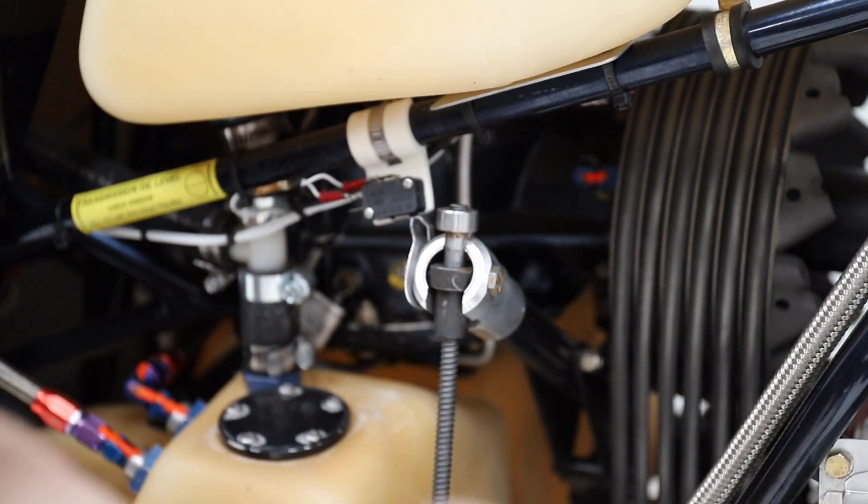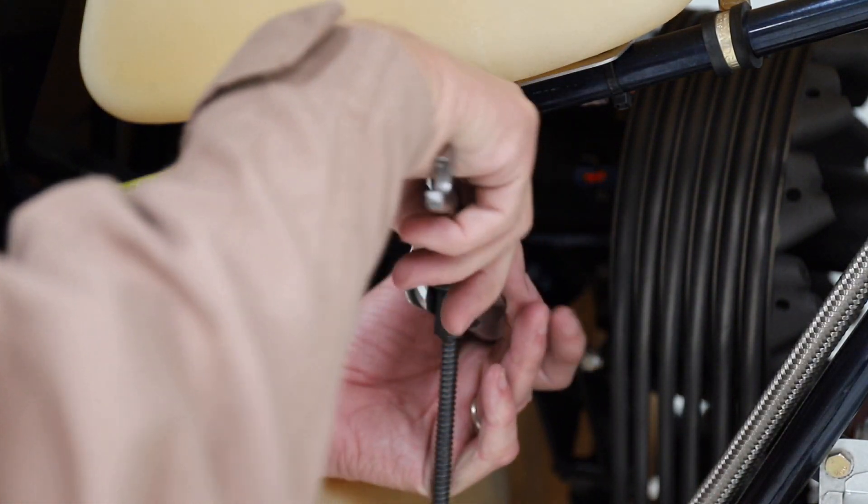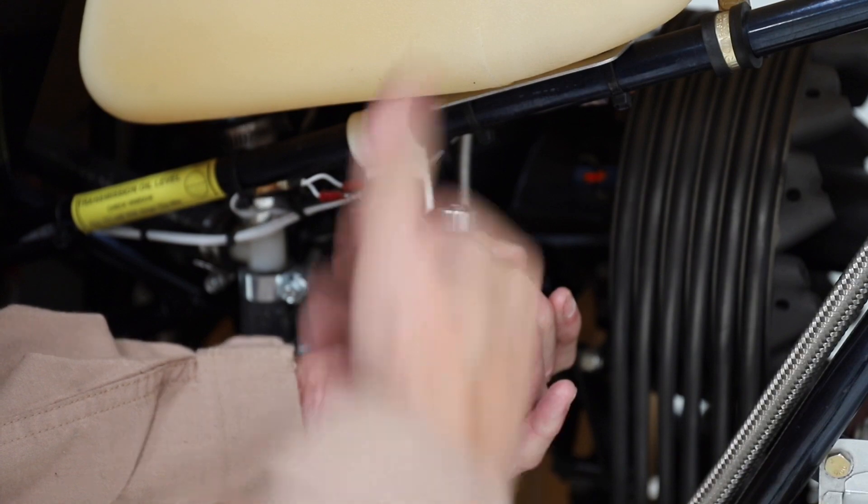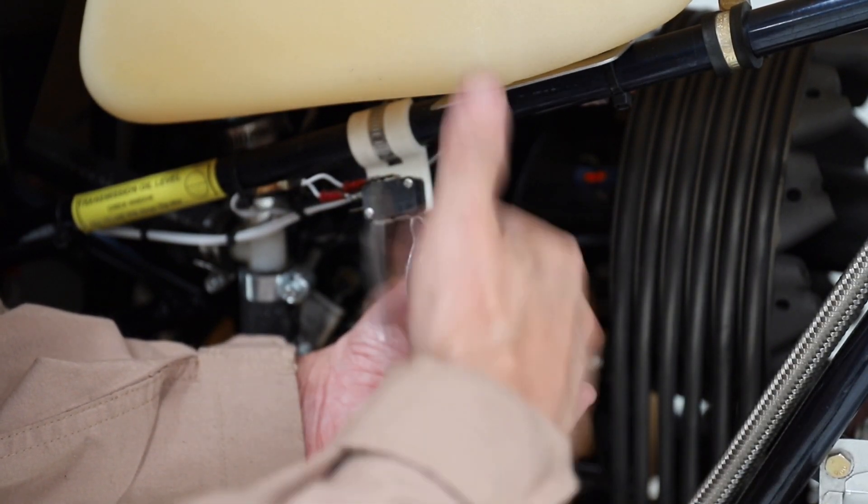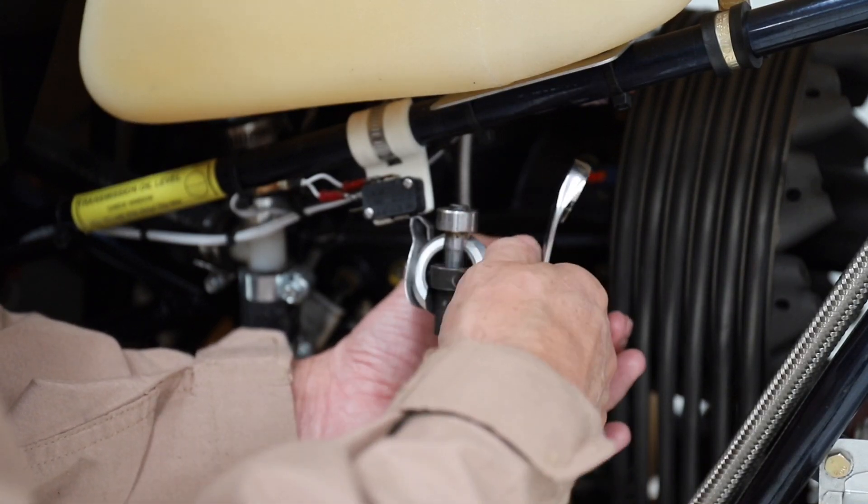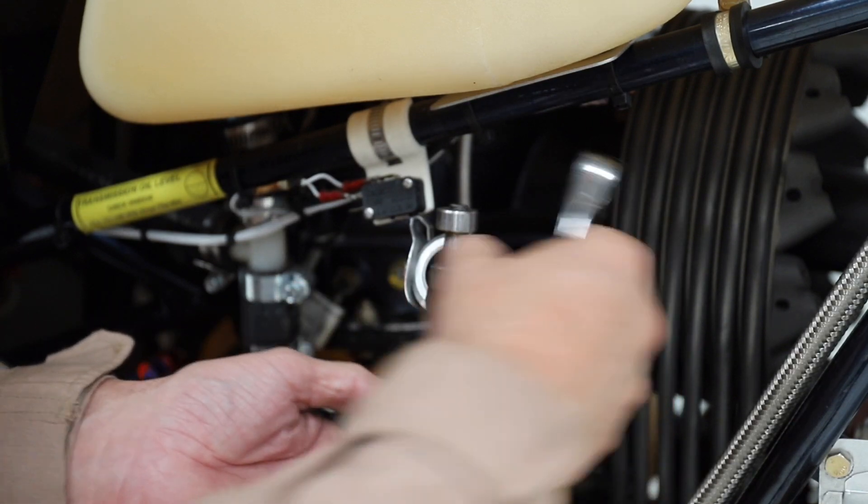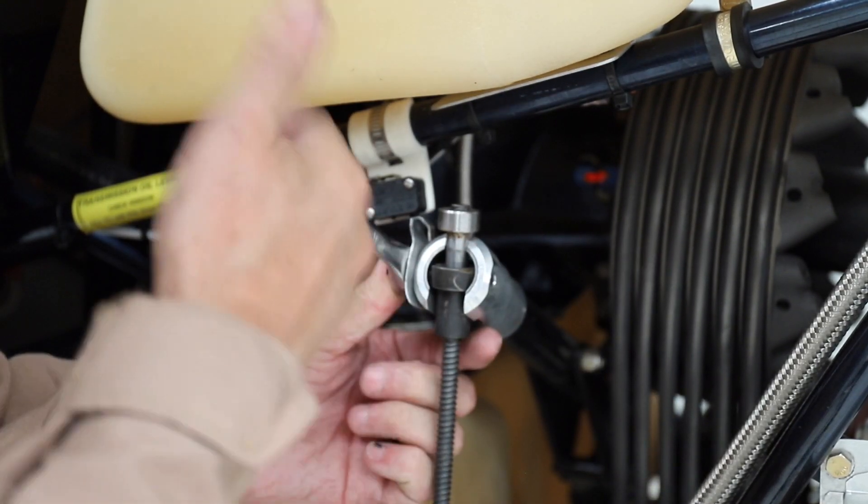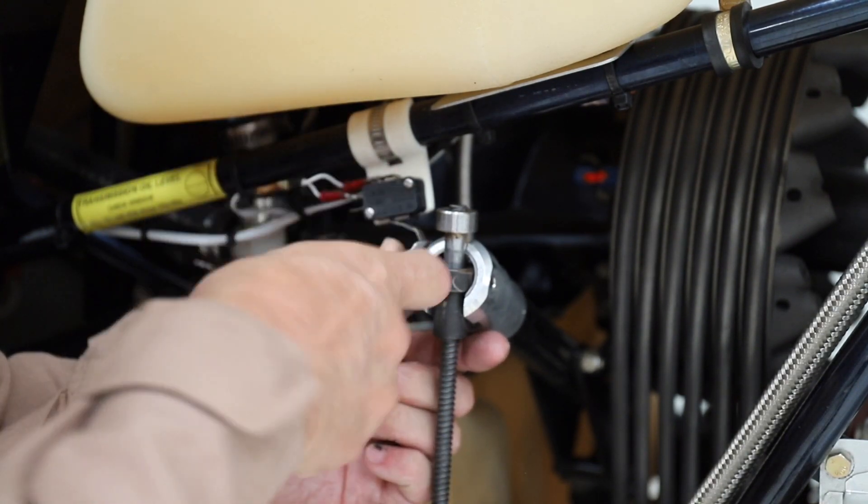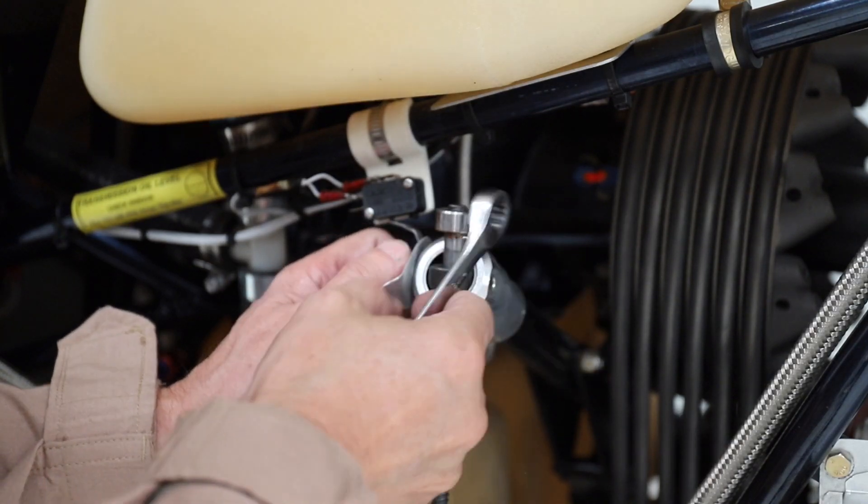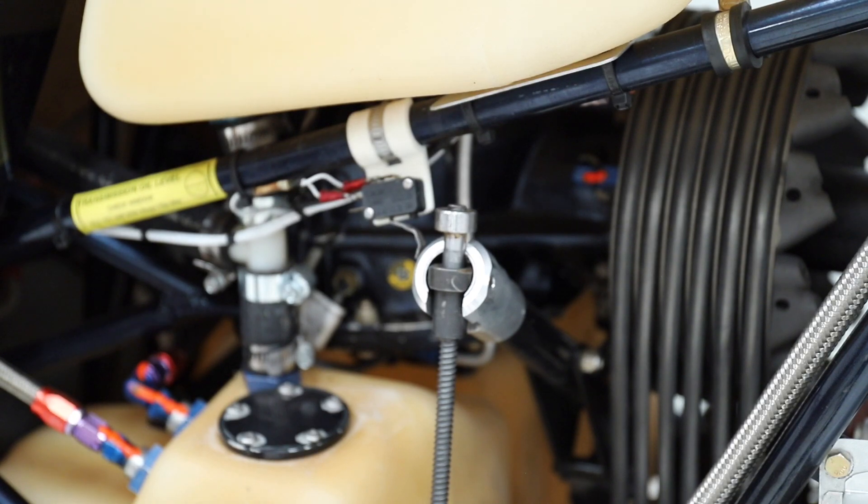So the first thing we're going to do is remove these two bolts that hold the jack screw to the clutch arm, and we do that with our seven sixteenths wrench. And we go ahead and set those parts and pieces aside.